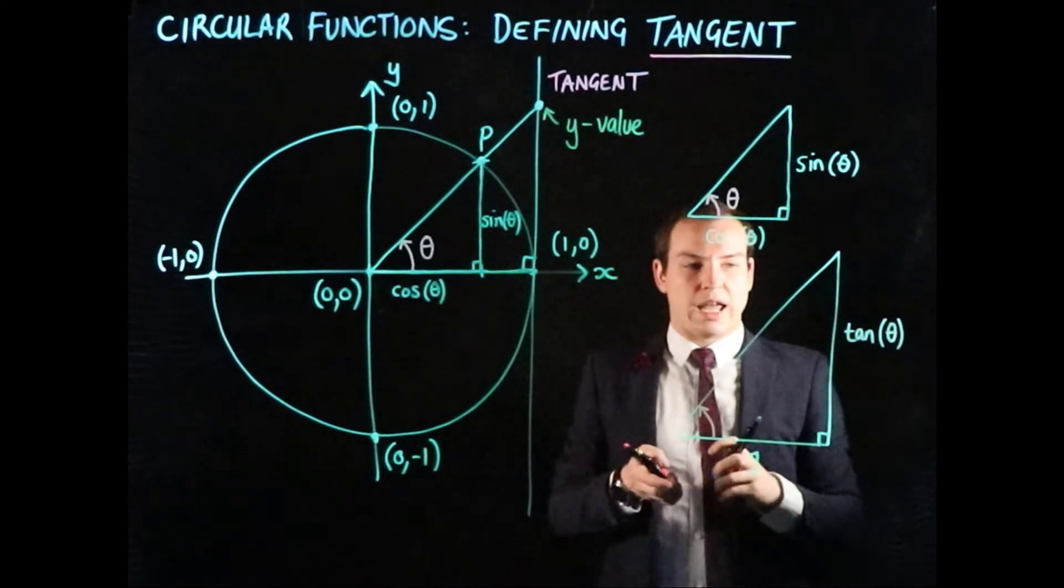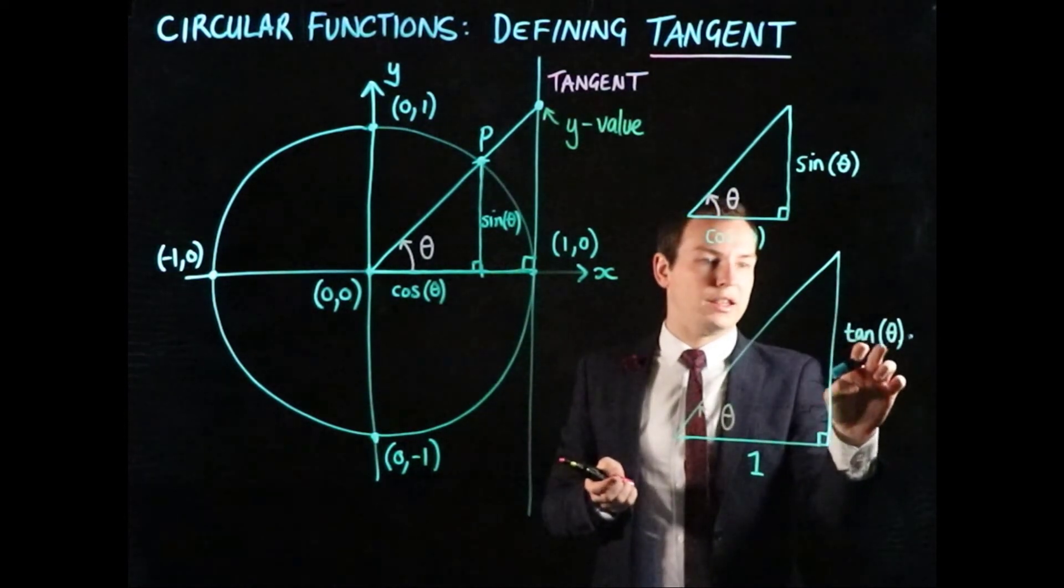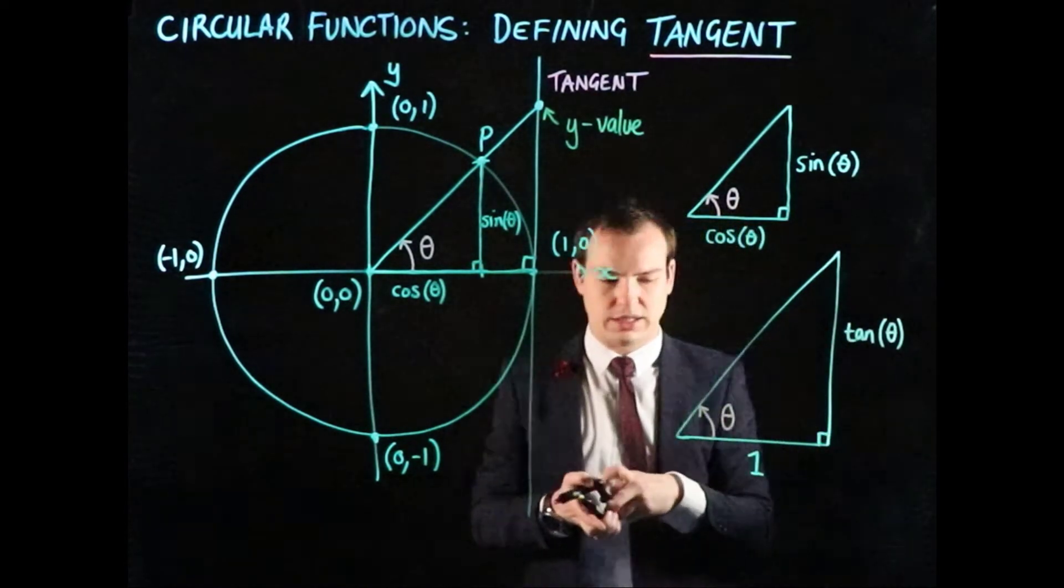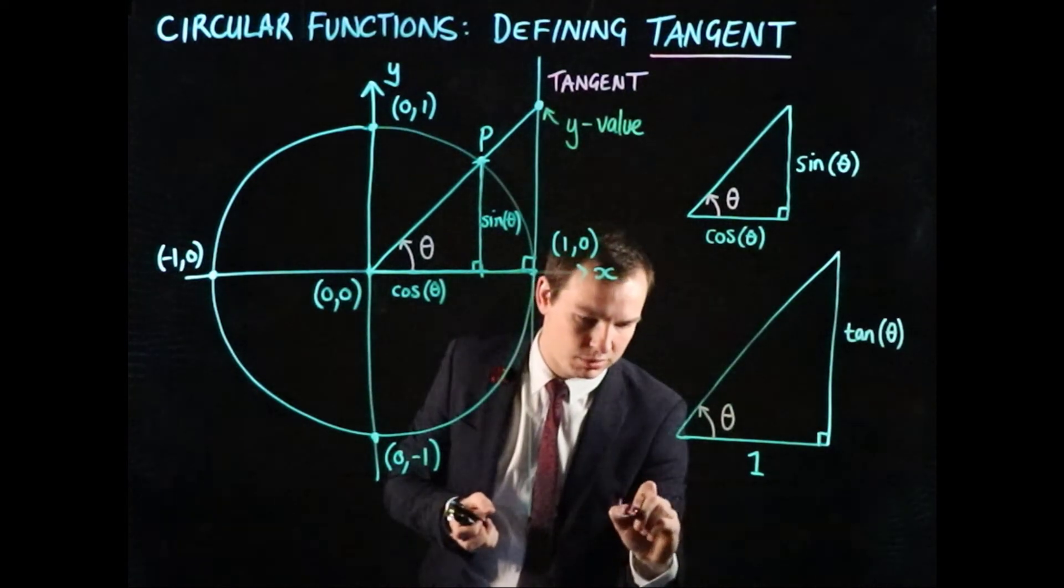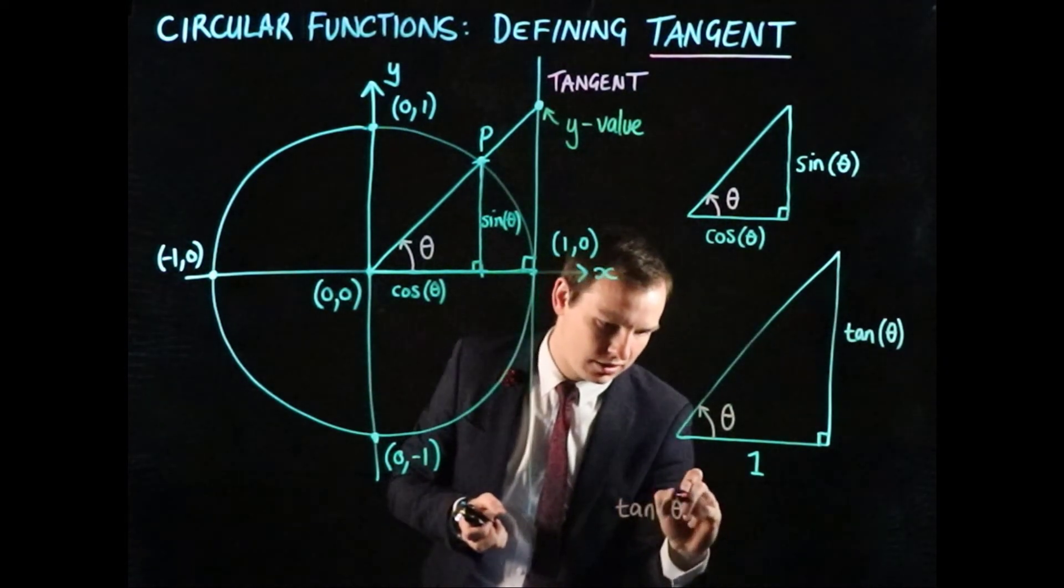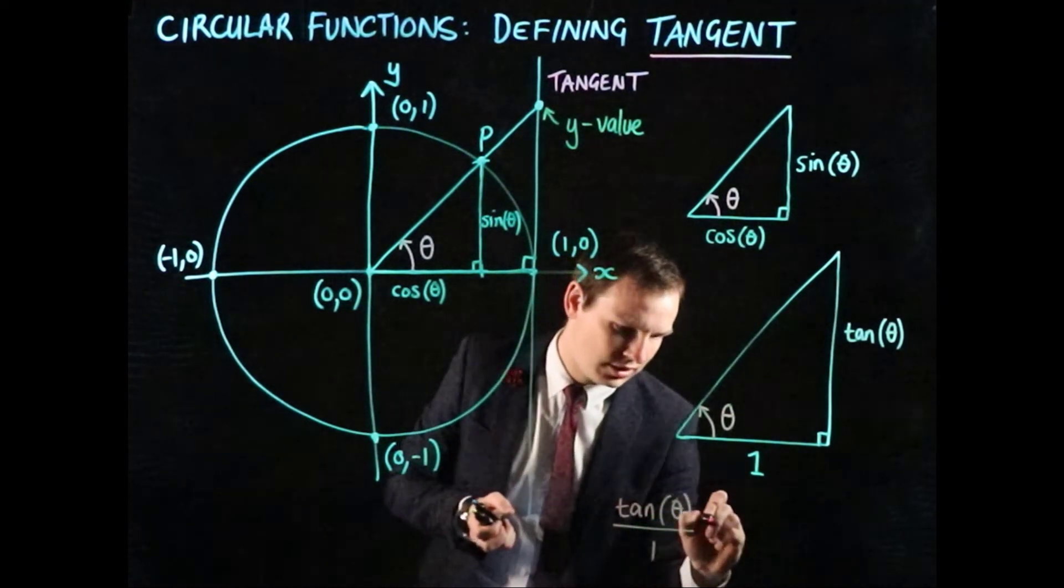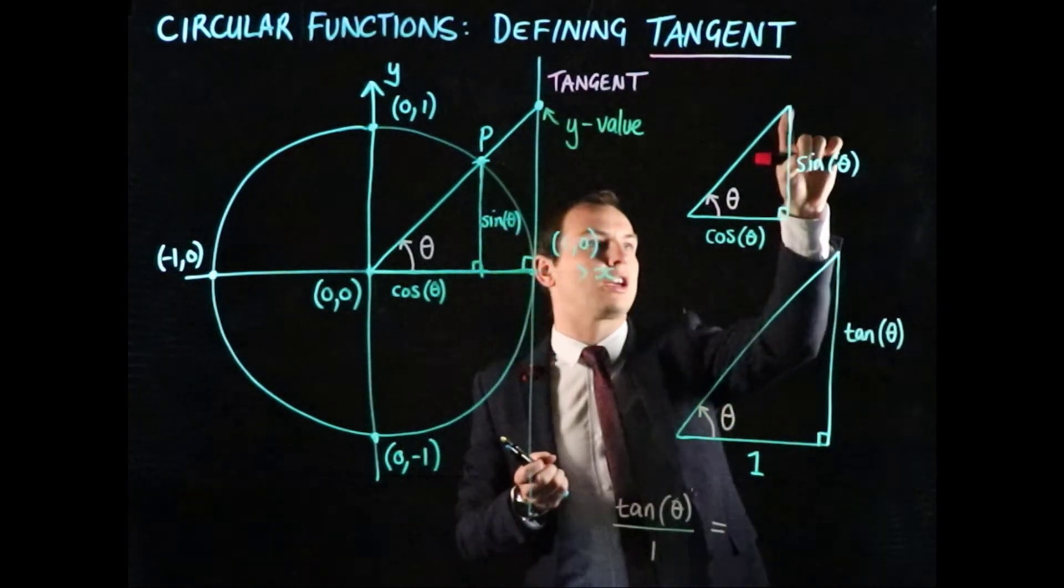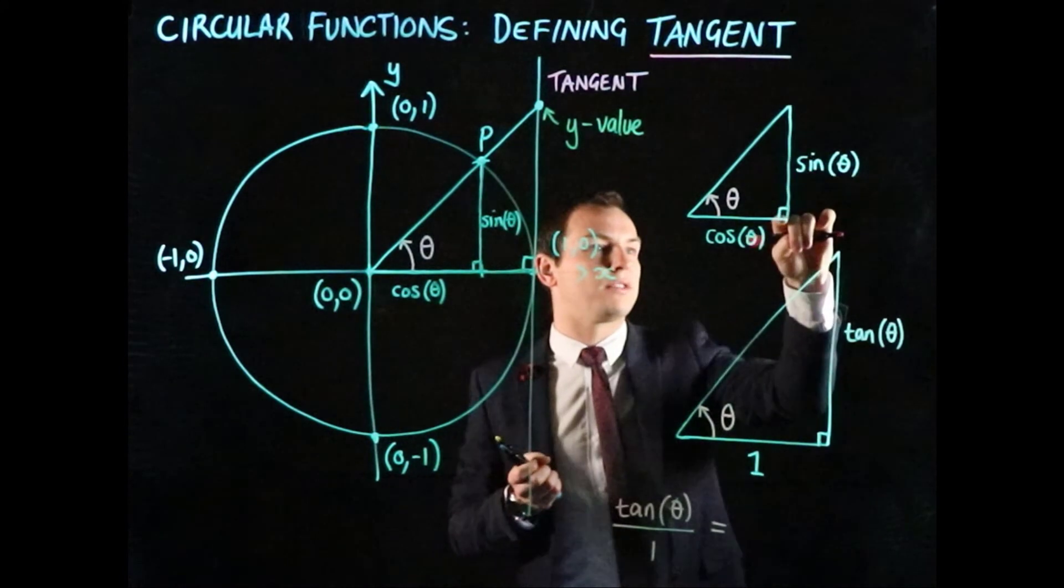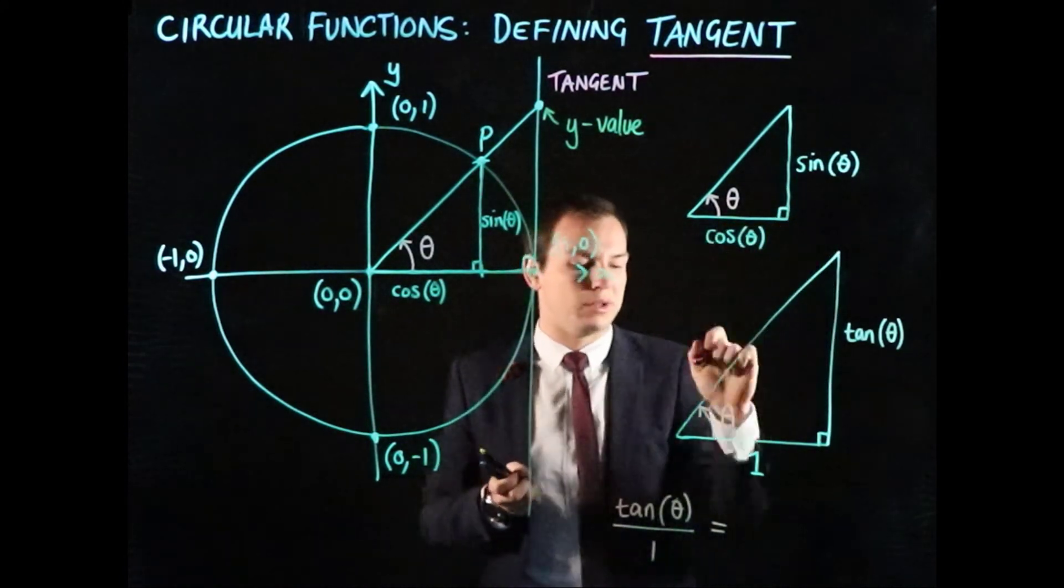We can say there's a ratio: tan(θ) over 1. Let's write that down. The ratio between tan(θ) and 1 must equal, because they're similar triangles, the ratio of the corresponding sides: sin(θ) over cos(θ).